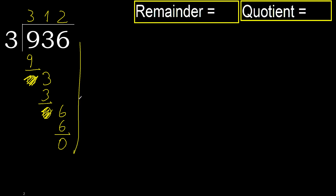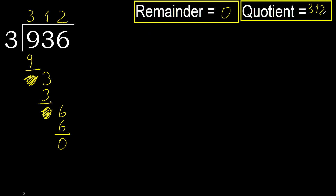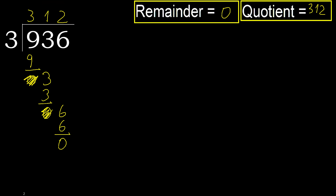There is no next number, therefore finish it. 936 divided by 3 is done here. Ok. Thank you.